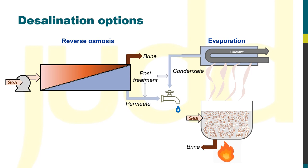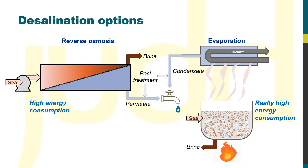In terms of energy consumption, you could think of the RO permeation as being high and evaporation as being really high. So in practice, RO is always used for desalination unless a low-cost thermal energy source is available.